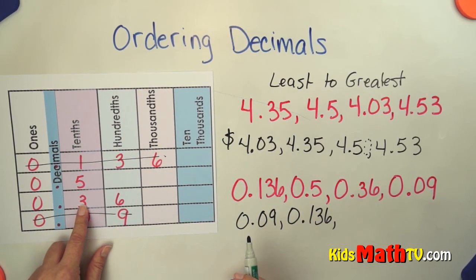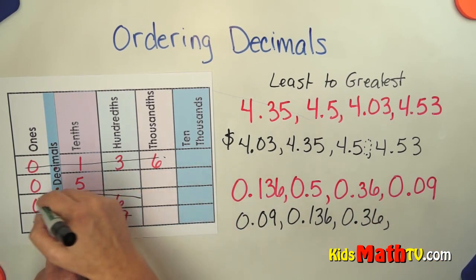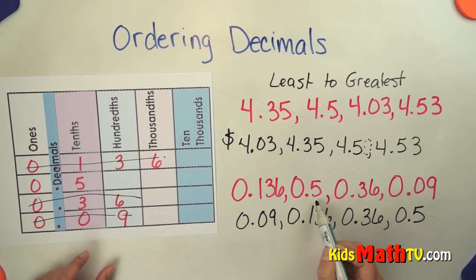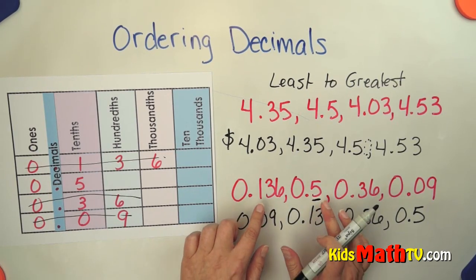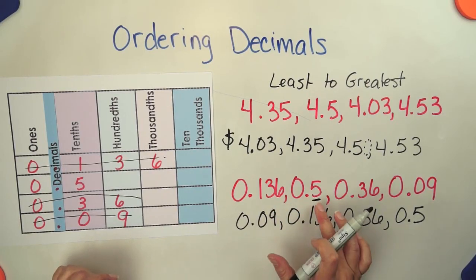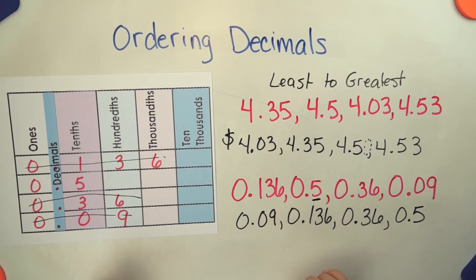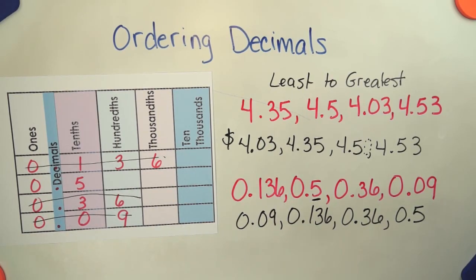My next largest tenths is a three. So my next largest number is zero and thirty-six hundredths. Leaving five tenths as my largest number. So even though five is smaller than one hundred thirty-six, it's actually larger than one hundred thirty-six thousandths. Five tenths is larger than one hundred thirty-six thousandths. So don't let just the numerals trick you. Make sure you put them into place value order and compare the place values before you put them in order.